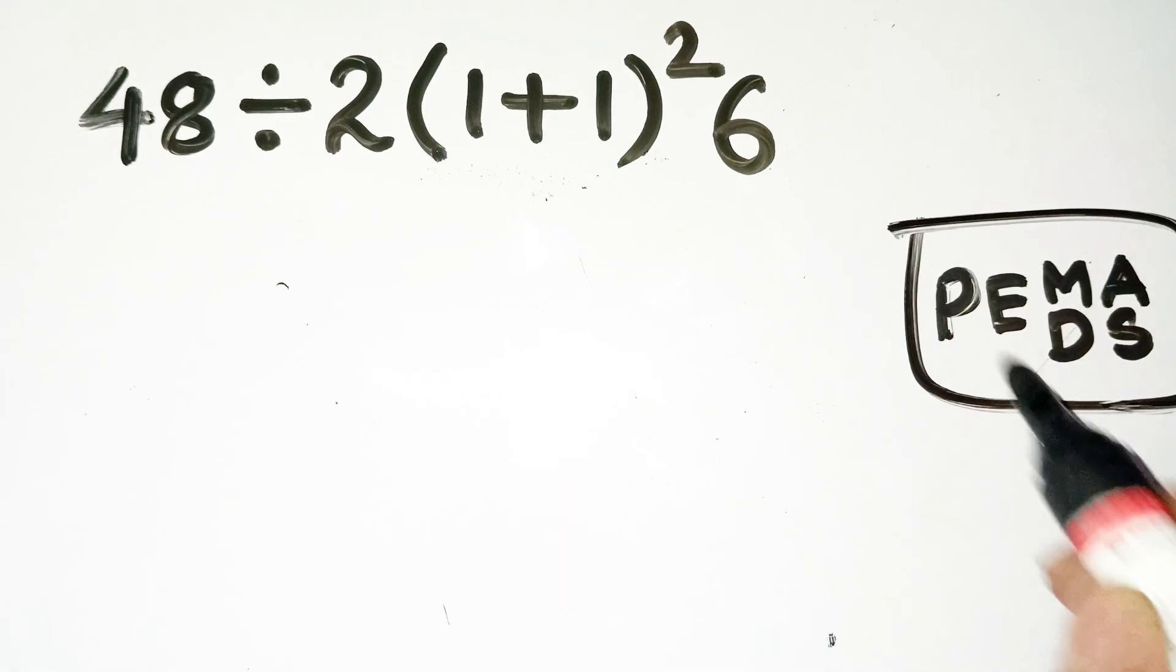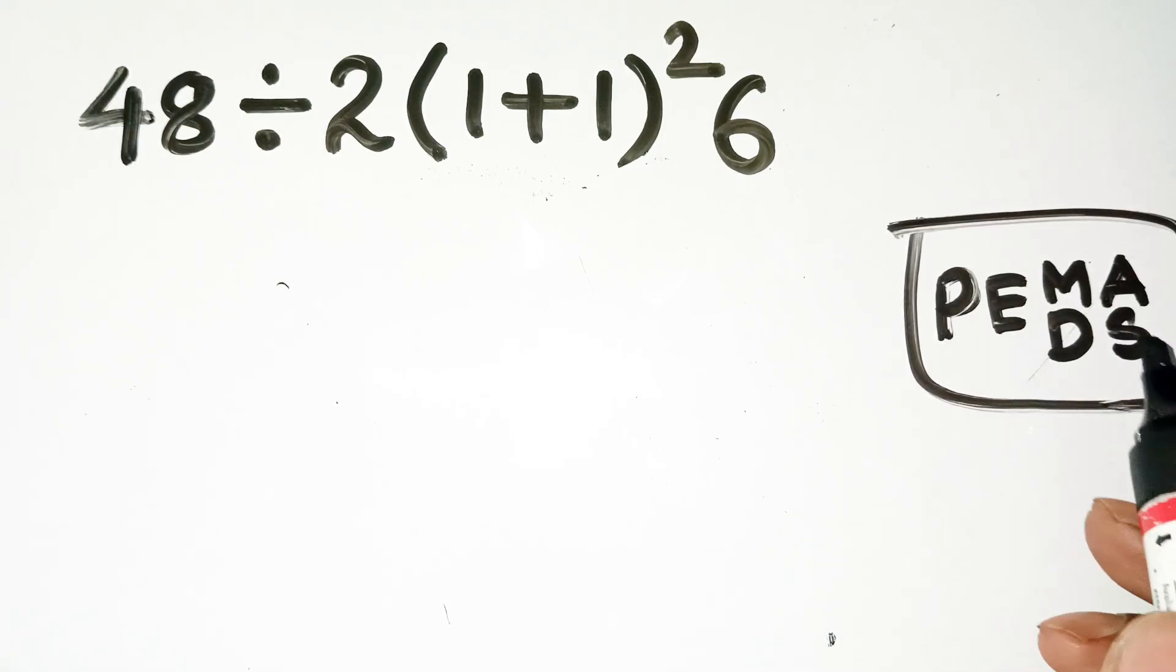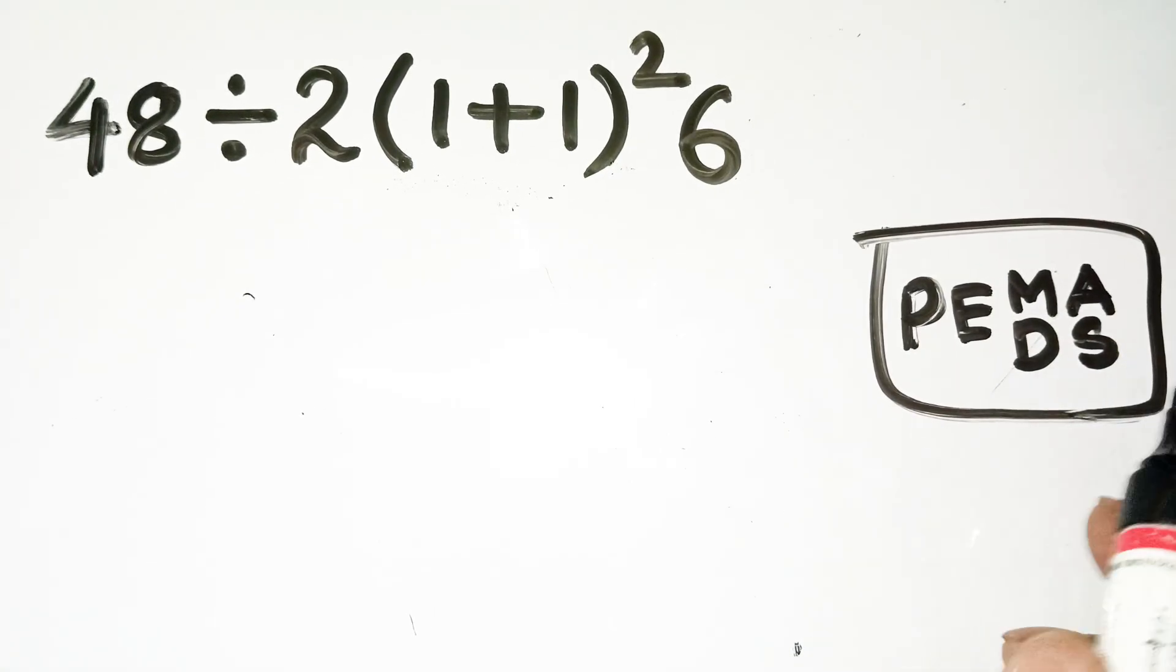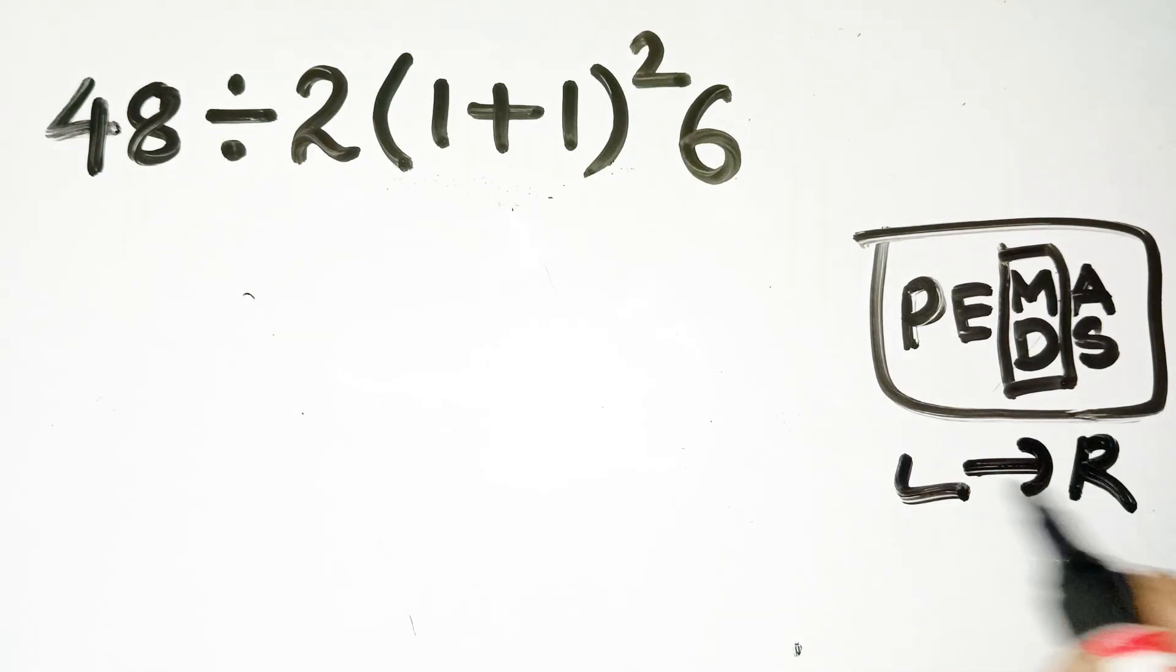It's PEMDAS, which stands for parentheses, exponents, multiplication, division, addition, and subtraction. In that order. But here's the catch. Multiplication and division have equal priority. You don't just jump to whichever side you want. You go left to right, step by step.